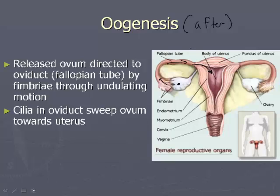The sperm is going to encounter the egg in the oviduct, and that's where fertilization takes place. The fertilized or unfertilized egg then travels through — if unfertilized it passes through, and if fertilized it will embed in the uterus.